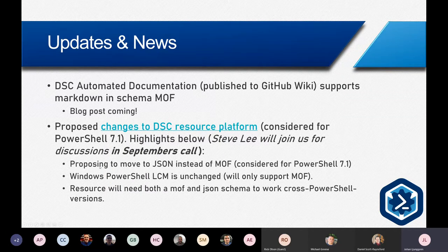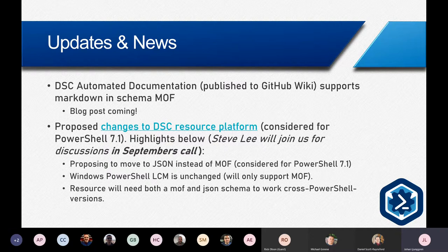The highlights are: it's proposing to move to JSON instead of MOF for PowerShell 7.1. Windows PowerShell LCM will be unchanged and will support MOF. It will be possible to add both MOF and JSON to a DC resource so it can be compatible with both Windows PowerShell and PowerShell 7.1. We can talk more with Steve Lee next month.